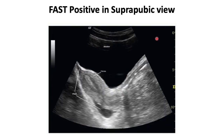In the longitudinal view of the suprapubic scan, you can see the bladder containing anechoic fluid. This image is from a female patient because the uterus is visible. Free anechoic fluid can be seen around the uterus — in the context of trauma, this is considered FAST positive.